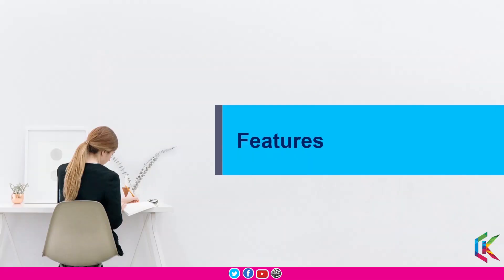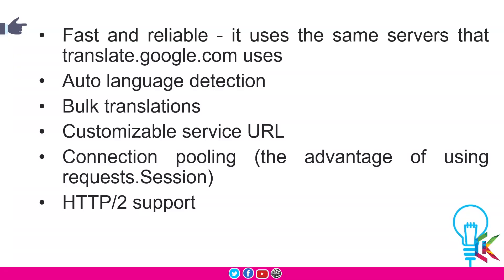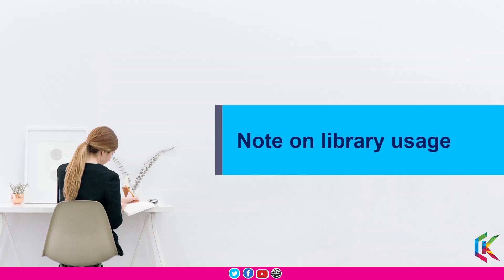Now we are going to discuss some features of this Google Translator library. The first feature is fast and reliable — it uses the same servers that translate.google.com uses. The second feature is auto language detection. The third one is bulk translations. The fourth one is customizable service URL and connection pooling — the advantage of using request.session is connection pooling. The next feature is HTTP or HTTPS support.